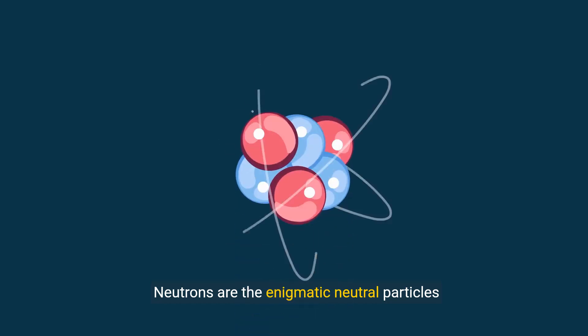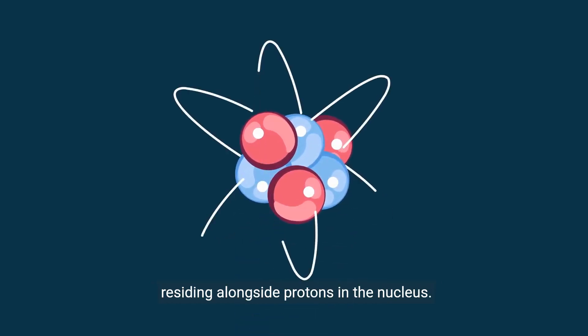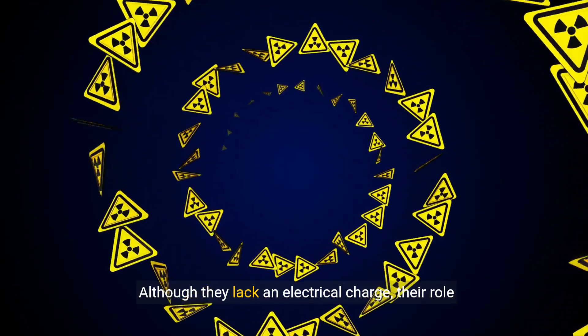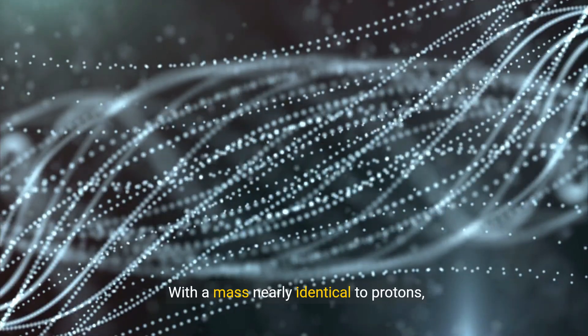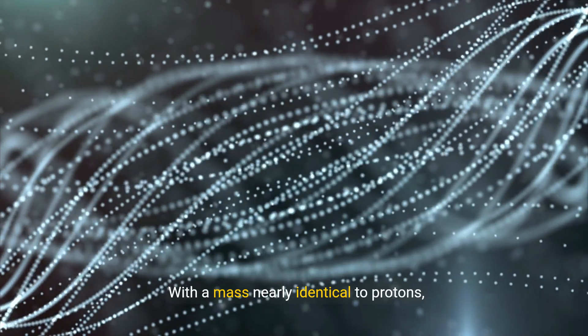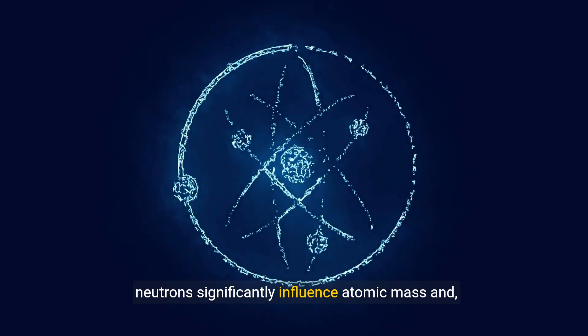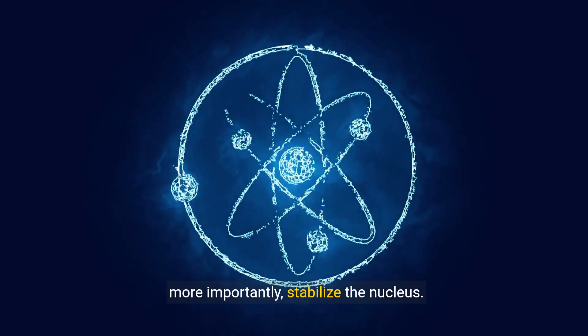Neutrons are the enigmatic neutral particles residing alongside protons in the nucleus. Although they lack an electrical charge, their role is far from trivial. With a mass nearly identical to protons, neutrons significantly influence atomic mass and, more importantly, stabilize the nucleus.